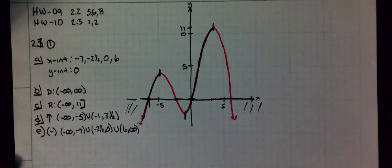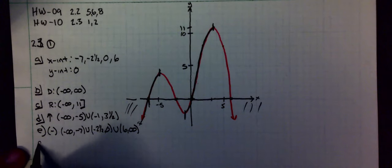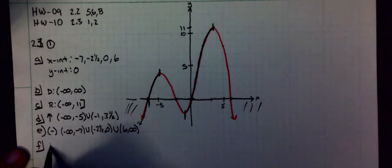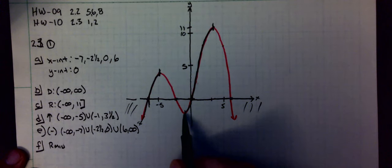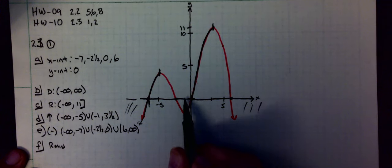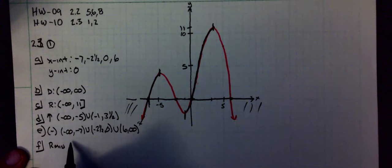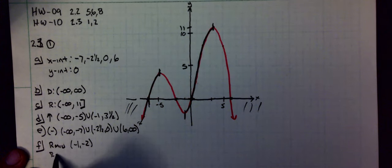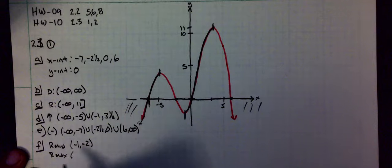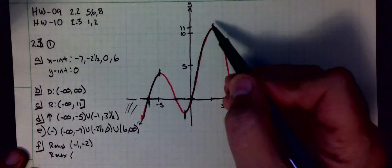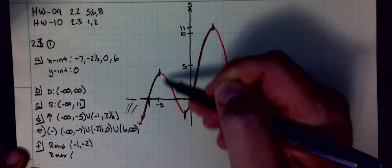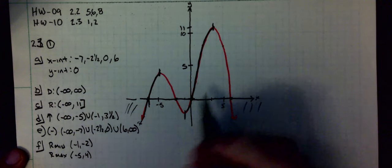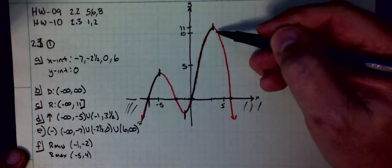Part F: relative minima and relative max. The relative minimum is going to be at the point negative 1, negative 2. Relative max: these are both relative, but one's also an absolute. My relative maxes are at negative 5 and at 3 and a half.